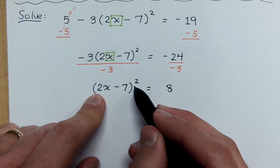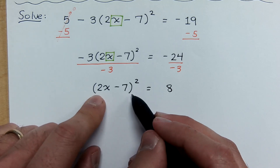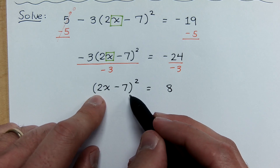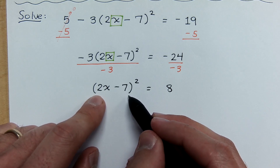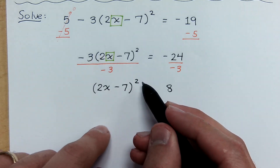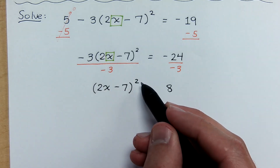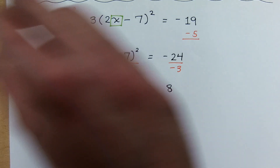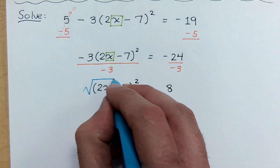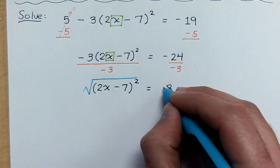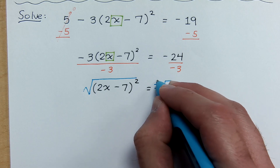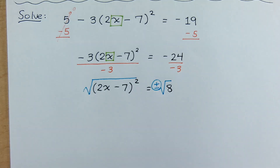Again, do not square this out. It just makes it messy or wrong or both. Instead, the square is applying to everything here. Undo the square by using the square root property. So we take the square root of both sides, remembering plus or minus, because we are the ones who introduced the square root.